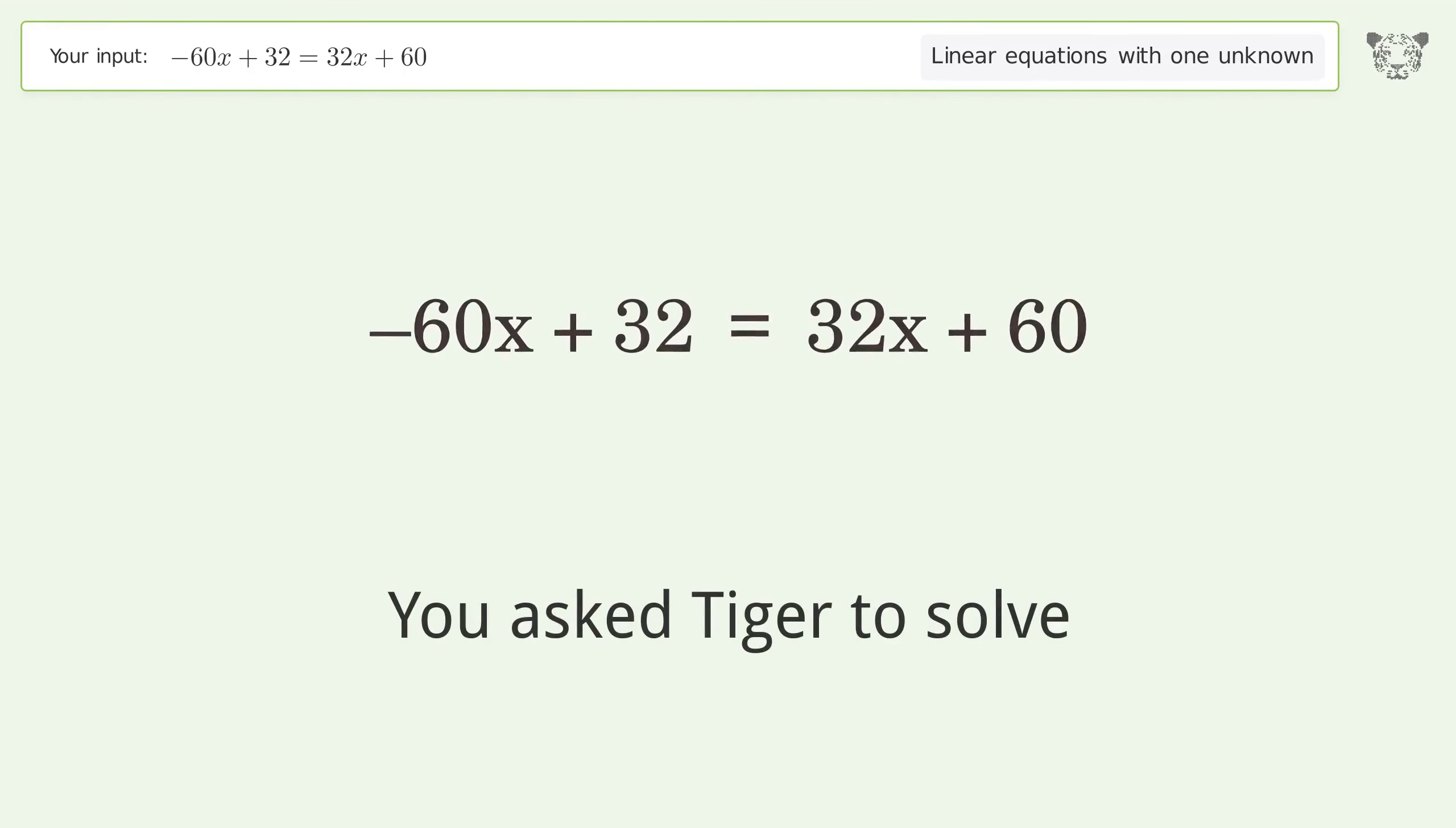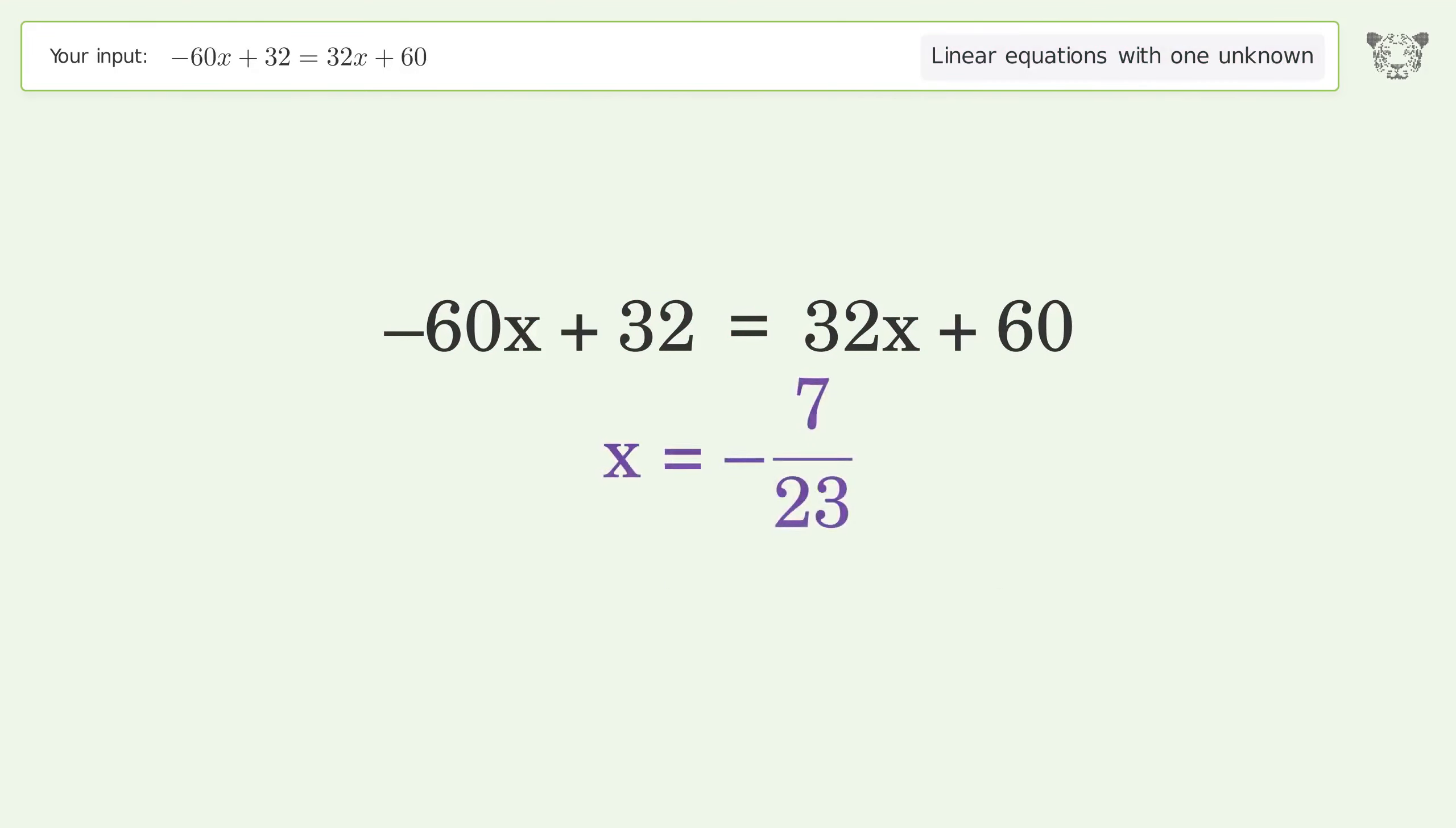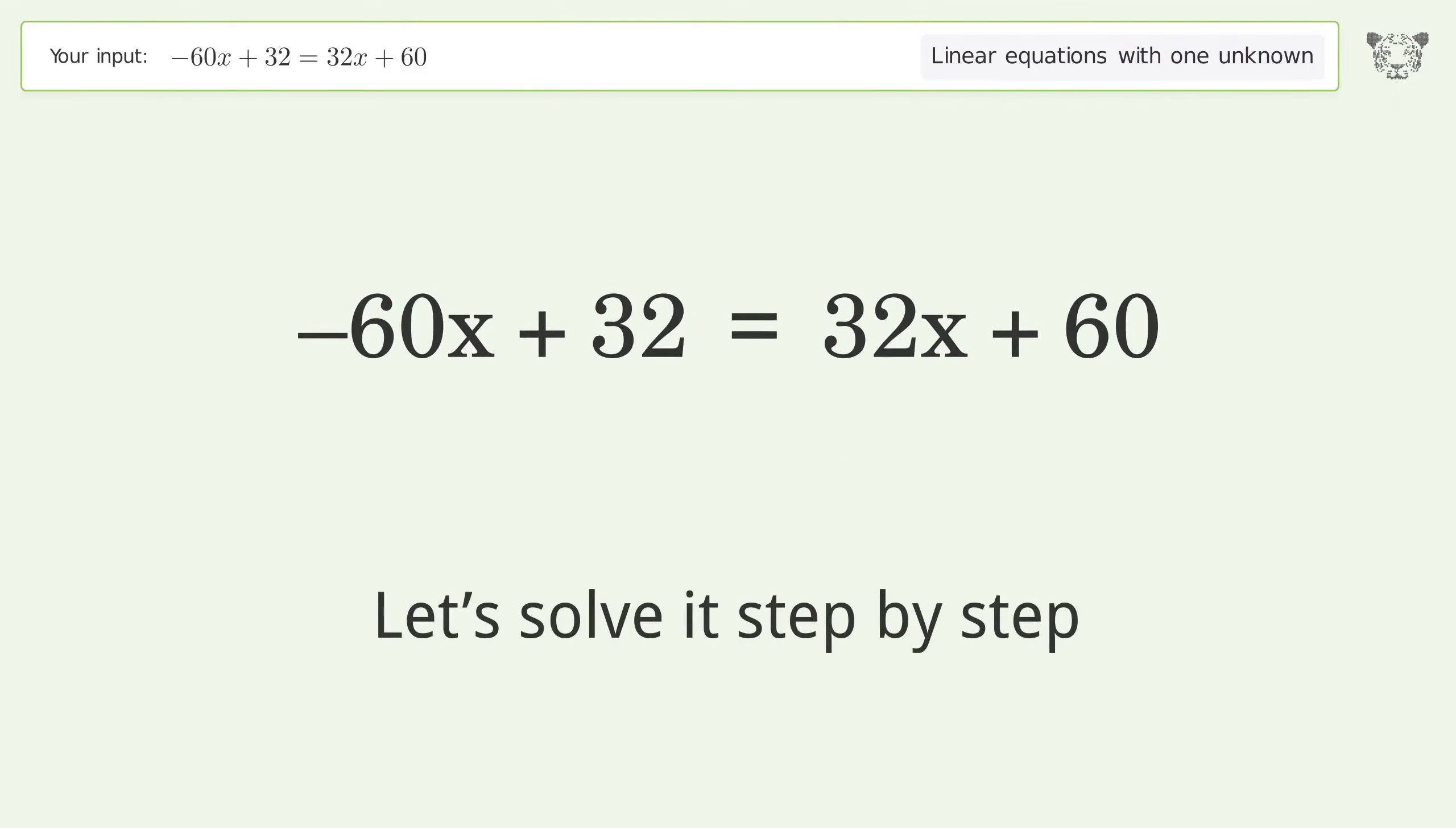You asked Tiger to solve. This deals with linear equations with one unknown. The final result is x equals negative 7 over 23. Let's solve it step by step.